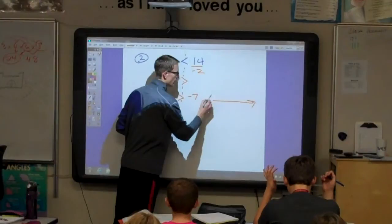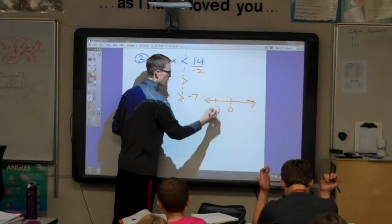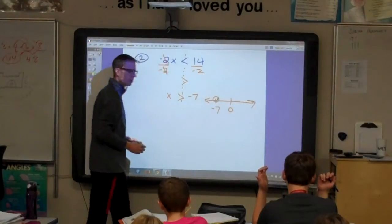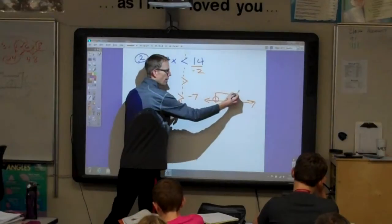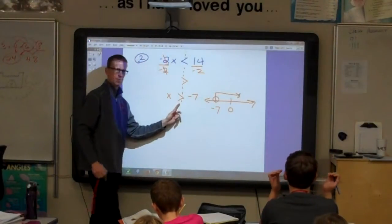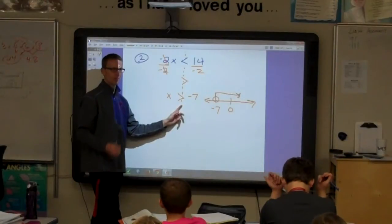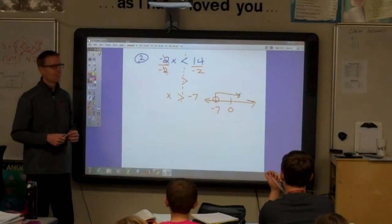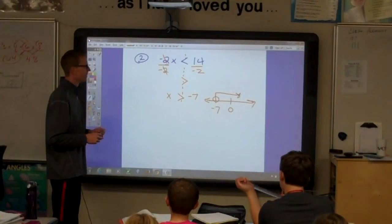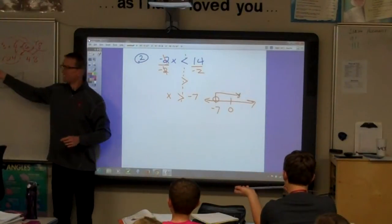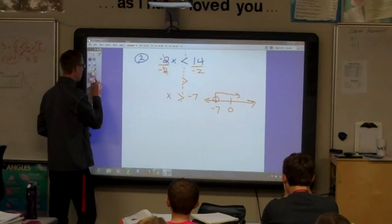Graph this. Mark 0. Mark negative 7 with an open dot. The variable is written first, so that we're going to shade the same direction as this sign. You got this one? I need graph. It says solve and graph. On the board, it says graph. On the board in our classroom. This is the board you've got to go by.